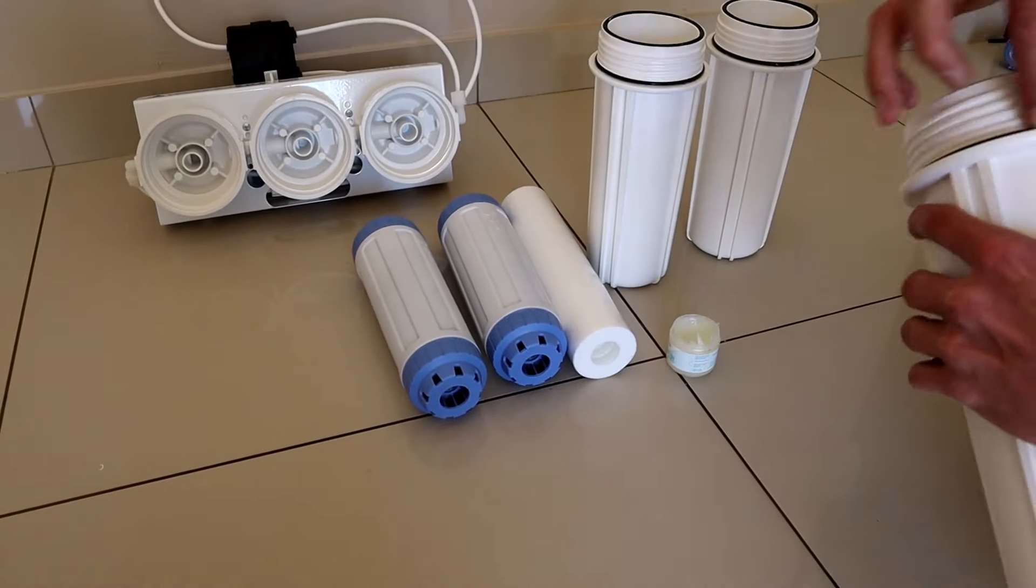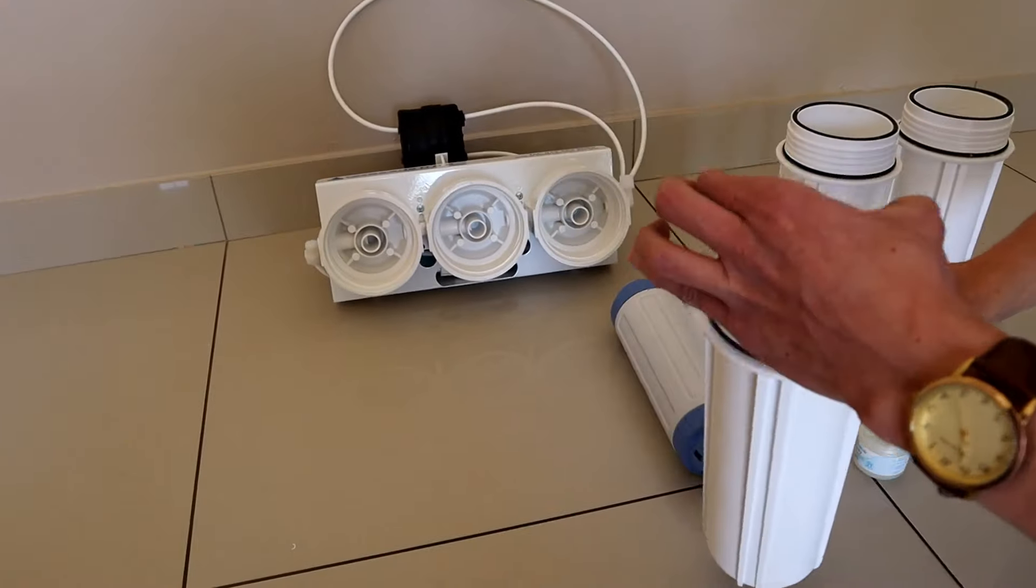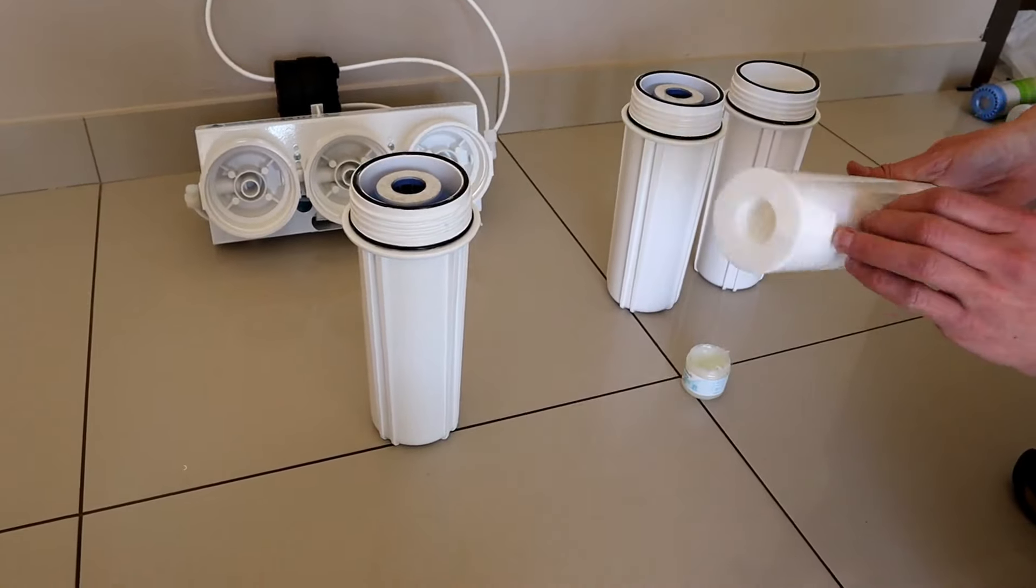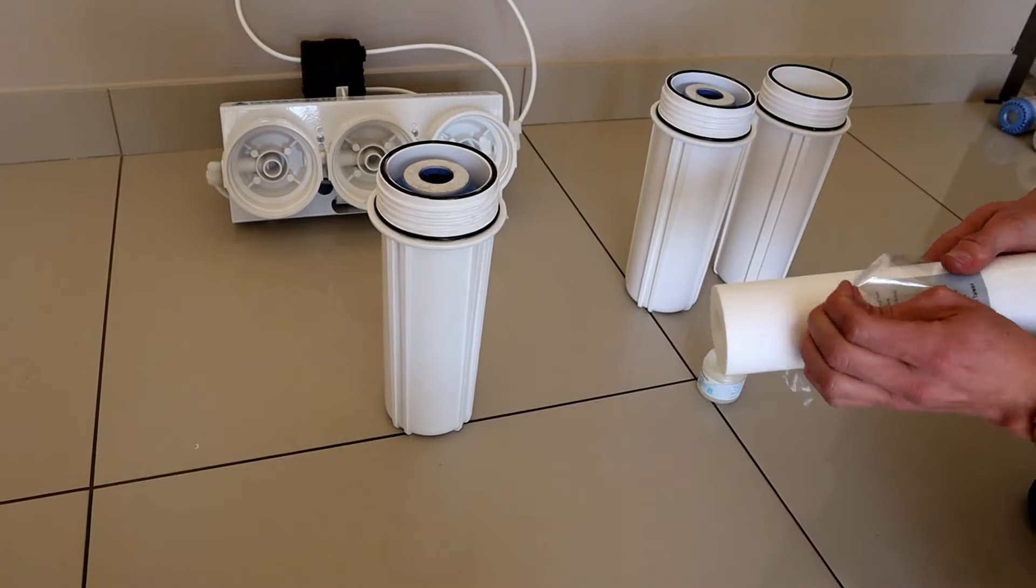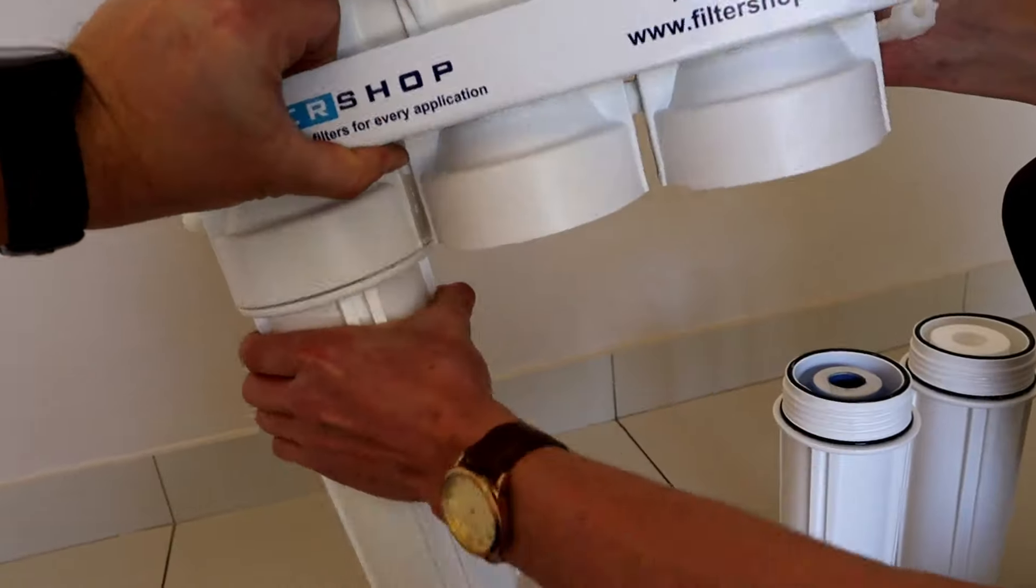Then we install the filters. Again, any of the seal surfaces, it's a good idea to add some Vaseline to, as well as a little bit on the thread. This just makes it much easier when time comes to changing the filters to actually get the housings loose.